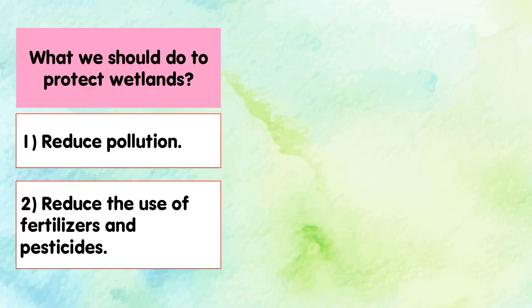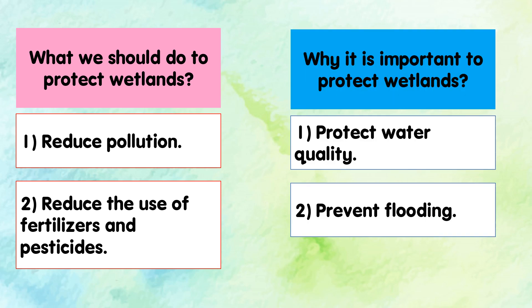What should we do to protect wetlands? We should reduce pollution and reduce the use of fertilizers and pesticides. Why is it important to protect wetlands? Because they help to protect water quality, and they also help to prevent flooding.